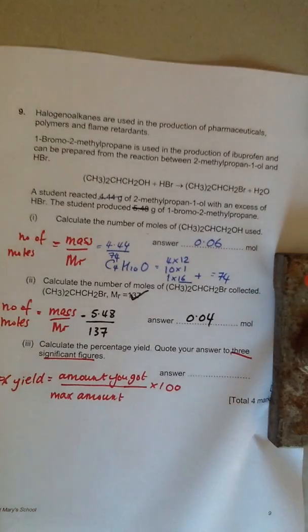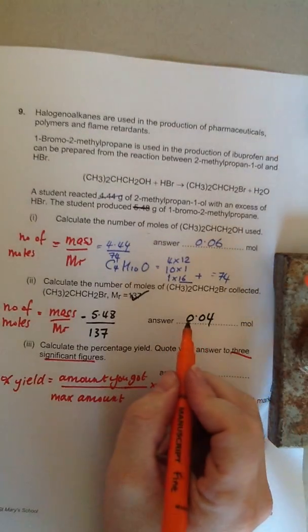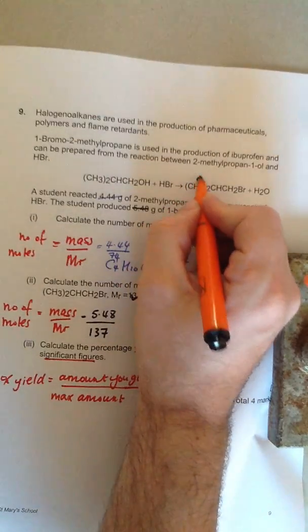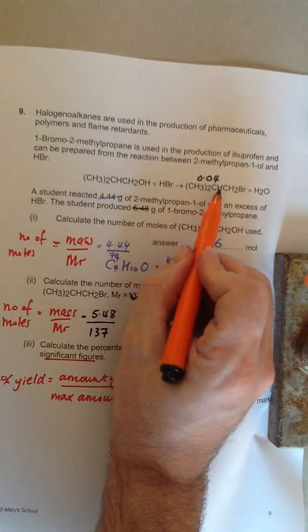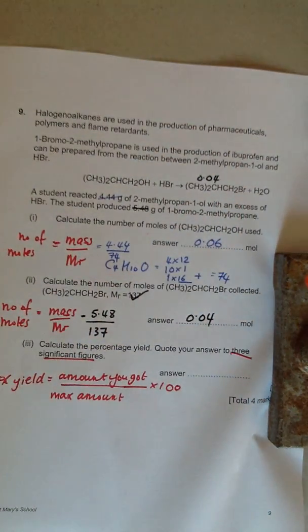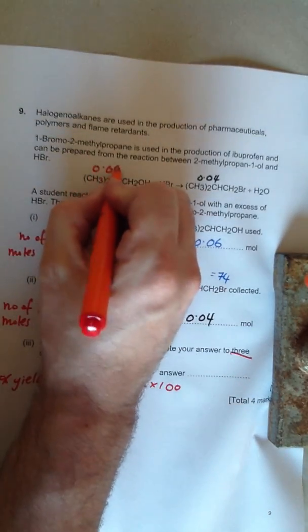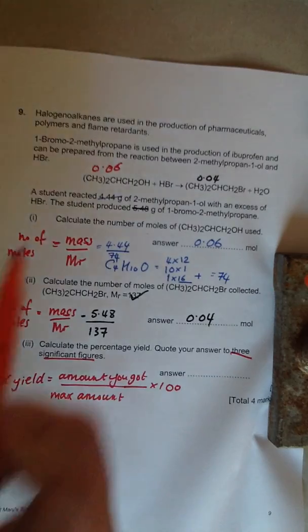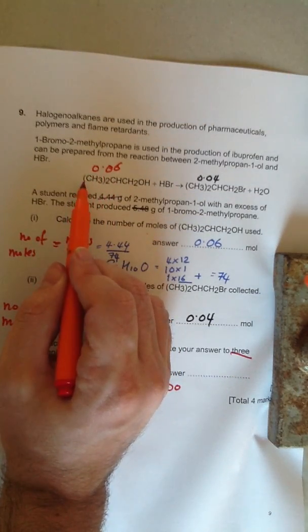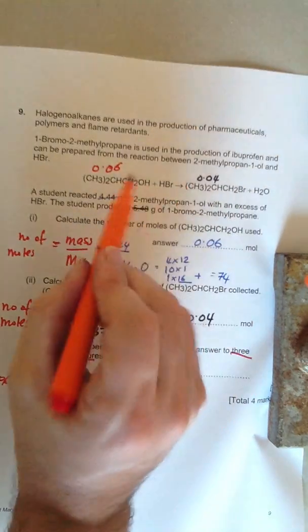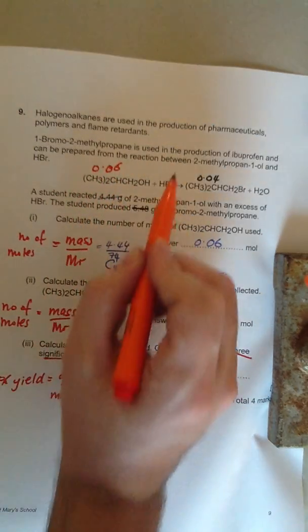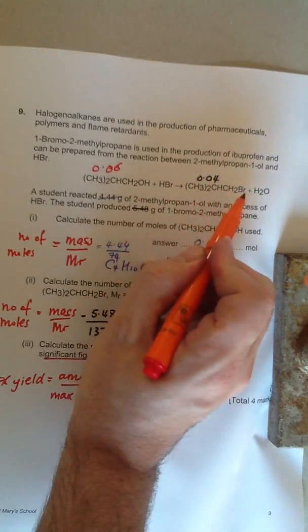So we're working out the percentage yield. And the percentage yield is related to your product, the thing that you got. So how many moles of product did we get? We got 0.04 moles of the CH3 twice CHCH2Br. But we actually started with 0.06 moles. Because we worked out in part of question one. If you look, you imagine there's the imaginary one there that we always imagine in chemical equations. On a perfect day, if the reaction would have been perfect, we would have started with 0.06 moles of our alcohol and we would have ended up with 0.06 moles of our halogenoalkane. But we didn't.